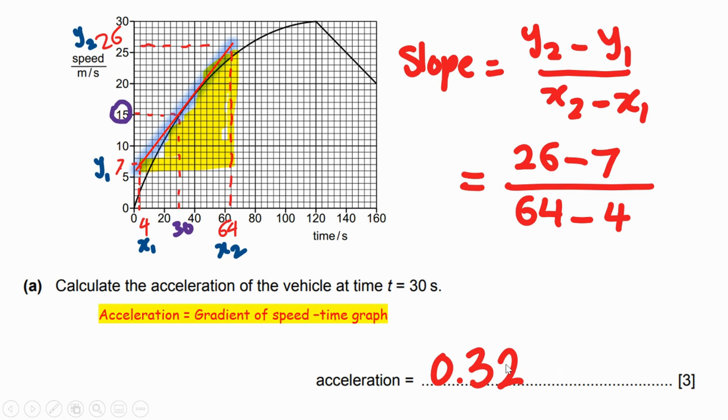It gives us 0.316 and you give the answer in two significant figures with the unit meters per second squared. One mark for acceleration equals the gradient, one mark for showing correct substitution with mathematical calculation, and the correct answer with the unit.